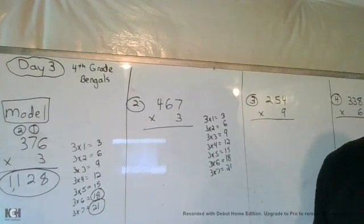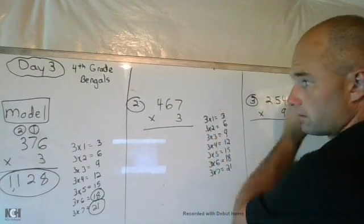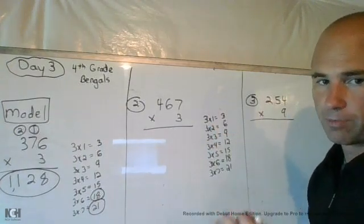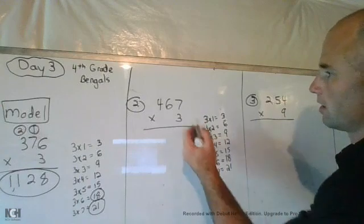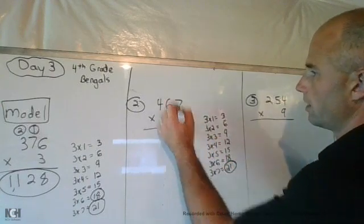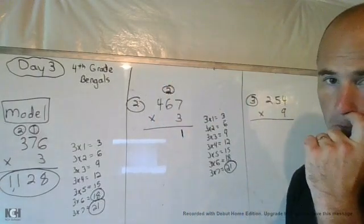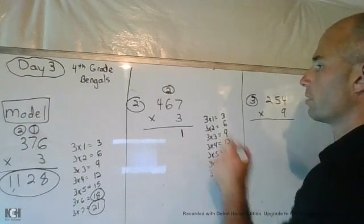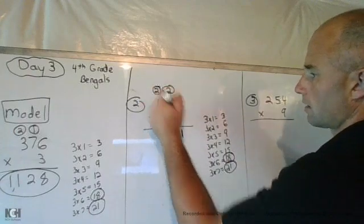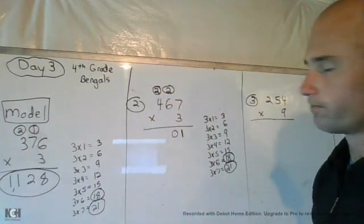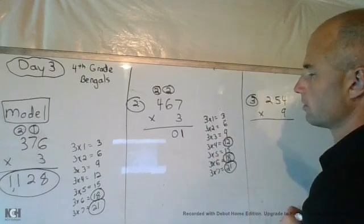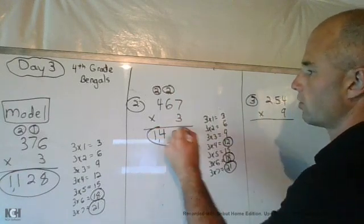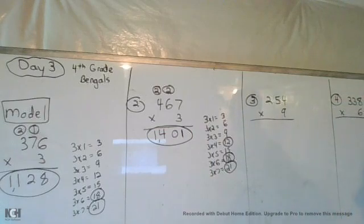Okay, 467 times three. Three times one equals three. I just recopied what I had here over here. I like to keep things organized, so that's why I did that. Three times seven equals twenty-one. Leave the one, carry the two from twenty-one. Six times three gives me eighteen. Plus two gives me twenty. Leave the zero, carry the two of twenty. Three times four equals twelve. Plus the two equals fourteen. Therefore, giving me an answer of one thousand four hundred one.